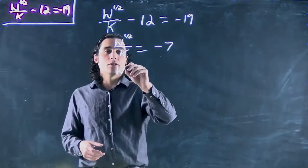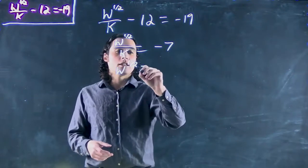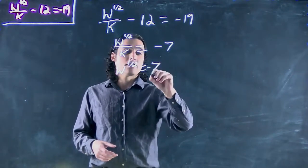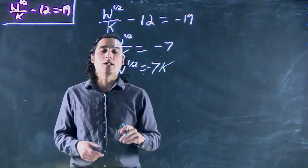Or we can say w to the one-half is going to equal minus 7k, because we're multiplying both sides by k to get rid of the k on the bottom.